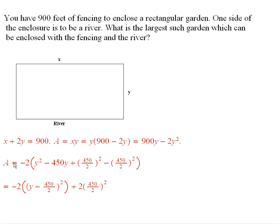So I'm now completing the square. Remember, we factor out this negative 2, and we have y squared minus 450y.